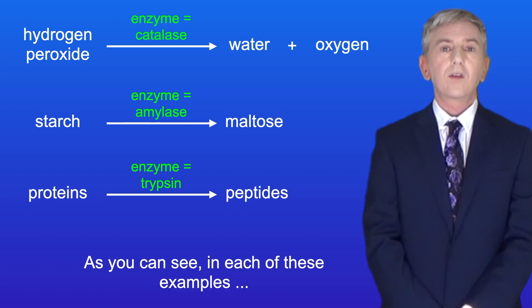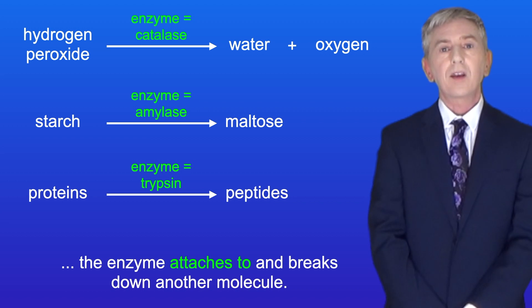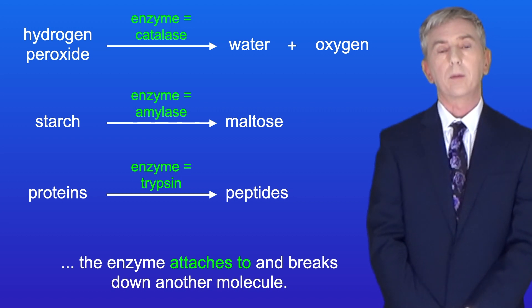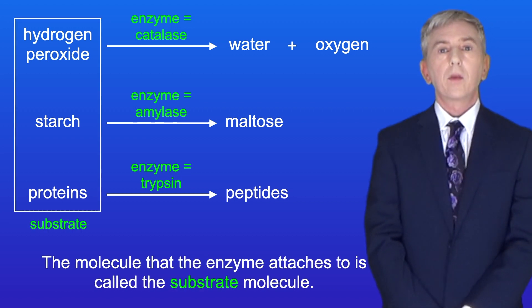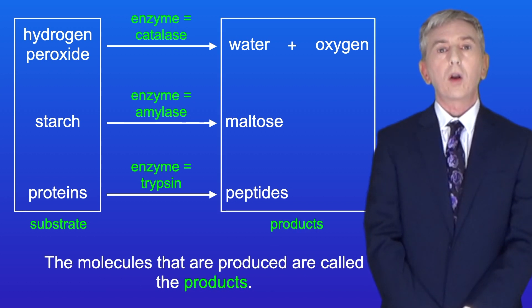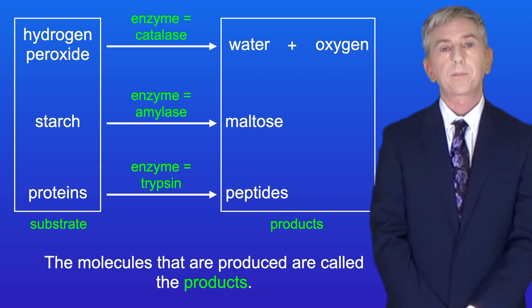As you can see in each of these examples, the enzyme attaches to and breaks down another molecule. The molecule that the enzyme attaches to is called the substrate molecule, and the molecules that are produced are called the products.